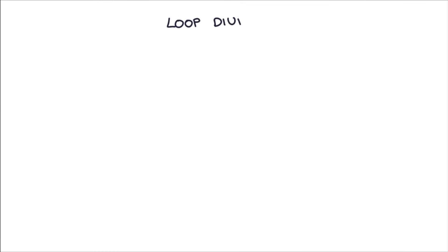Hi, this is Tom from zerotofinals.com. In this video I'm going to be explaining how loop diuretics like furosemide work on the kidneys to help remove a lot of fluid from the body. So let's jump straight in.